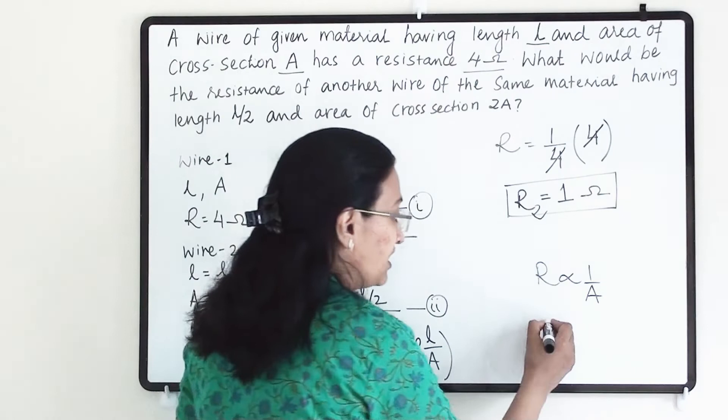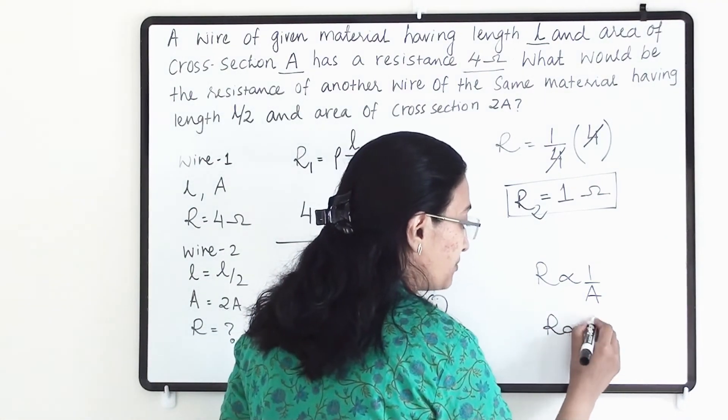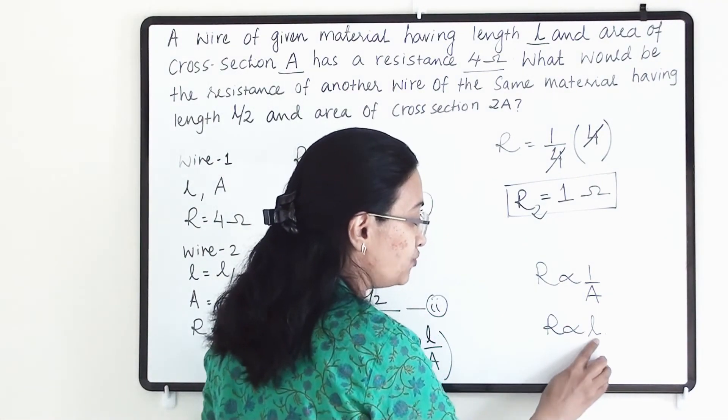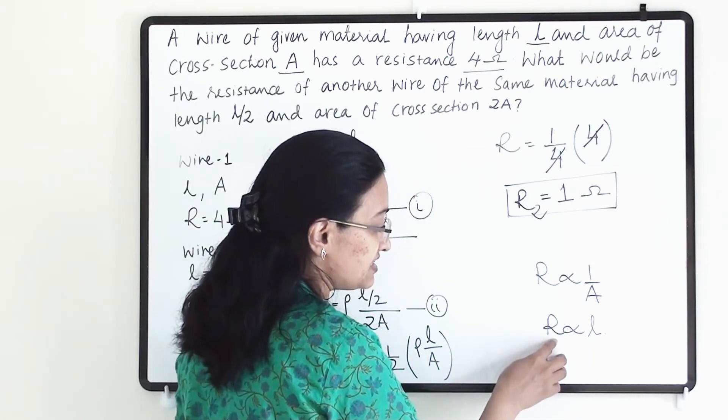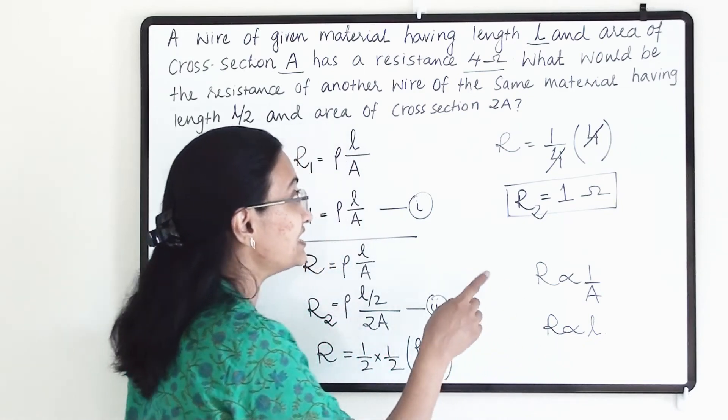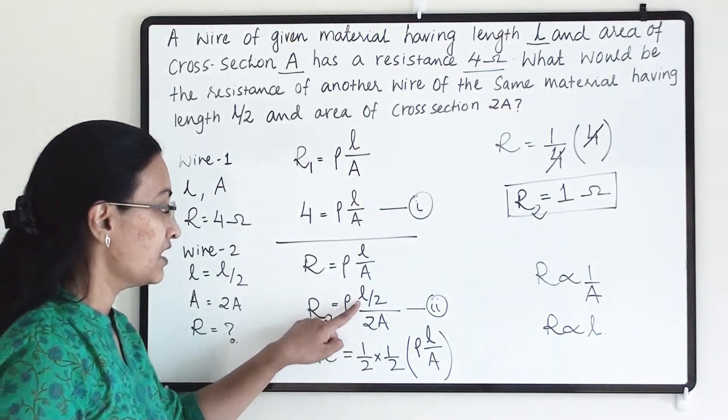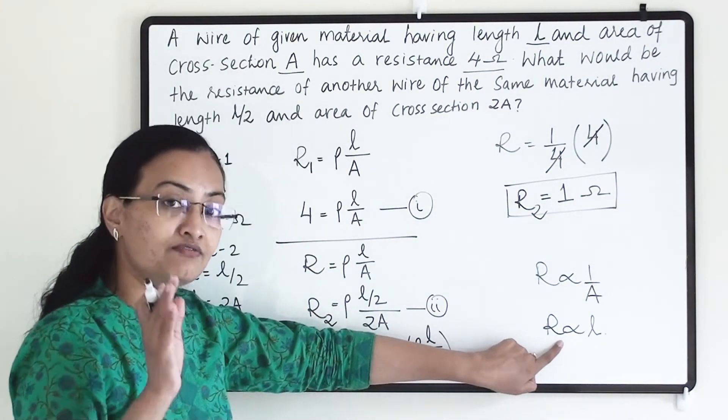With respect to length, resistance is directly proportional to length. If length will increase, resistance will increase, and if length will decrease, resistance will decrease. So here we have decreased the length by half.